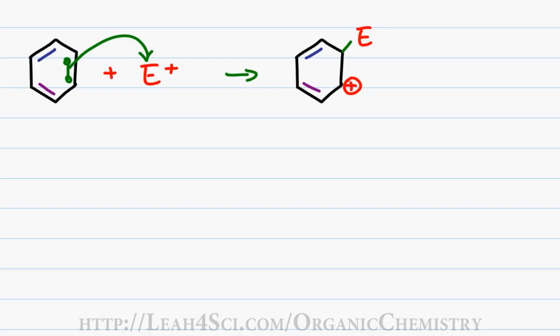This intermediate while it still has resonance is no longer aromatic for two reasons. Reason number one, we no longer have resonance going in a complete circle and reason number two, don't forget we had that hydrogen sitting over here which means the carbon where the electrophile added now has two bonds to carbon, one to the electrophile, one to hydrogen. It's sp3 hybridized and no longer planar.